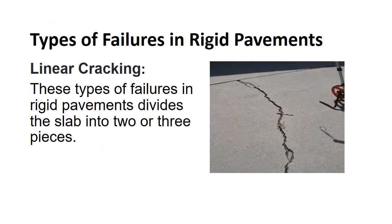Linear cracking is a type of failure in rigid pavement that divides the slab into two or three pieces. The causes are repeated traffic loads, curling due to thermal gradient, and moisture loading.